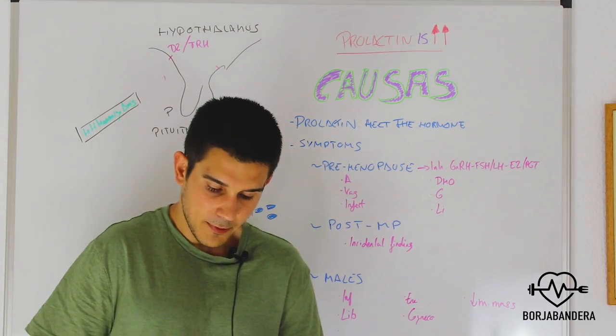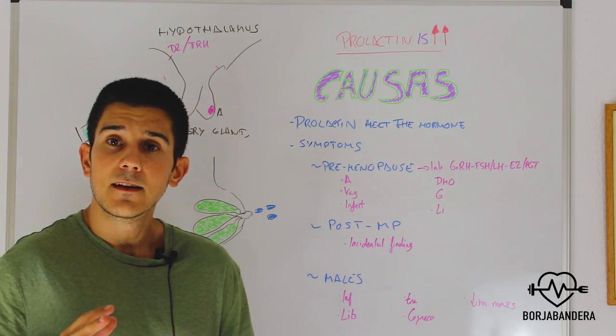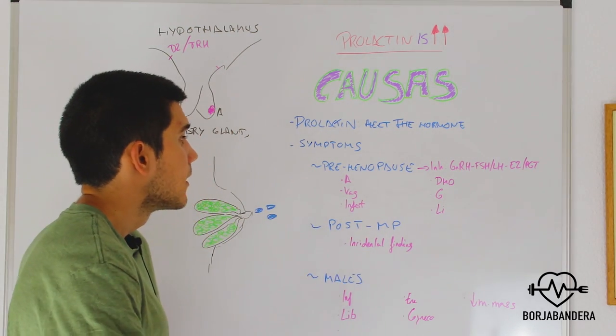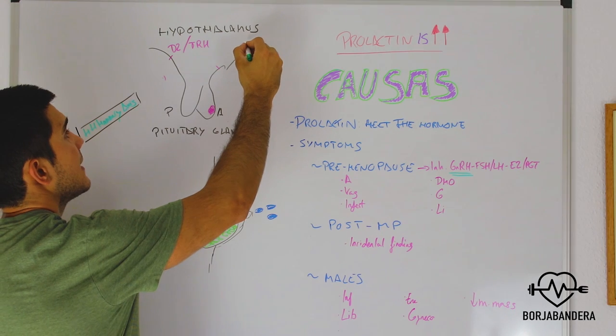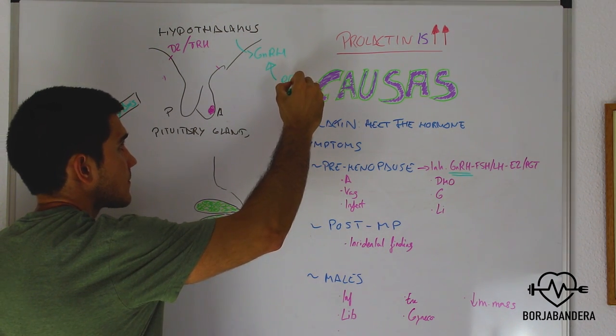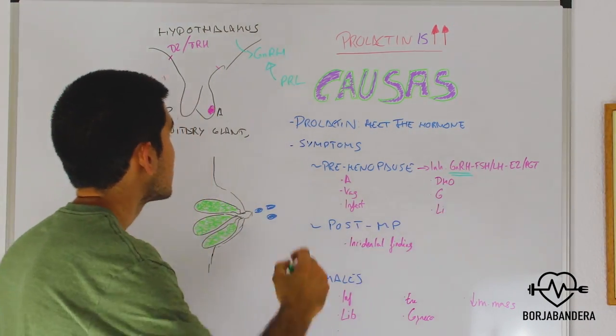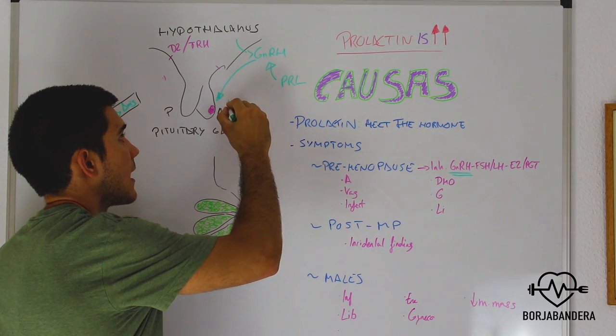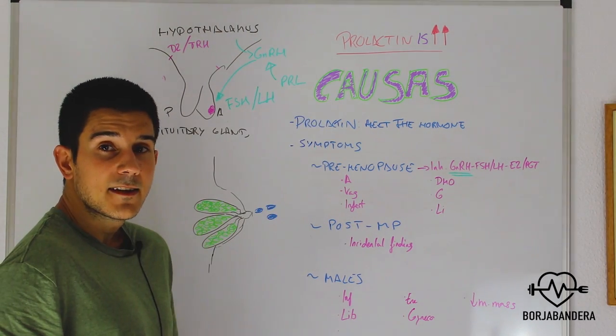Okay, starting with pre-menopausal women. The first thing and the more important thing that we have to consider here is that prolactin, when its concentration is high, inhibits one hormone, one important hormone that is produced in the hypothalamus that is called gonadotropic releasing hormone. Oh yes, gonadotropic releasing hormone secreted by the hypothalamus is inhibited by prolactin. And what are the consequences of that? Gonadotropic releasing hormone stimulates in the anterior pituitary gland the releasing of FSH, follicular stimulating hormone and LH, luteinizing hormone.